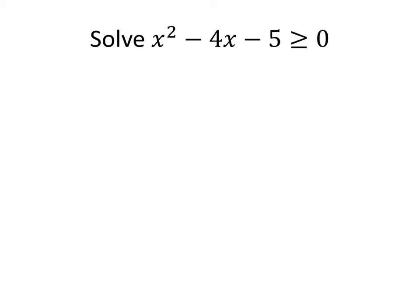We're not going to solve this in the traditional way. We can't really isolate x here, so we're going to try something else. What we might notice is that we can factor this quadratic. x squared minus 4x minus 5 factors into x minus 5 times x plus 1.